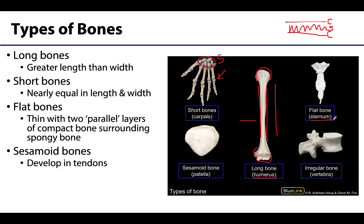Next we have the sesamoid bones, which are one of my personal all-time favorite types of bones. These are super neat because they form and develop within certain tendons — tendons connect muscle to bone — particularly in areas where there's considerable stress, friction, or compression. These bones may not be completely ossified even into adulthood, and the number of sesamoid bones in the body can vary from person to person. So the next time someone says there are 206 individual bones in an adult skeleton, you can smartly add, 'Well, not if you aren't considering the possibility of different sesamoid bones.'